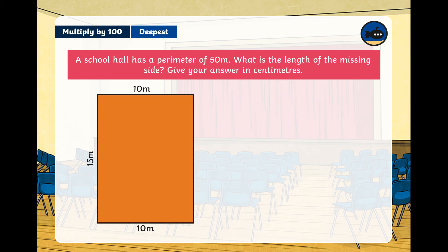A school hall has a perimeter of 50 meters. What is the length of the missing side? Give your answer in centimeters. Remember, there are 100 centimeters in one meter. Use your knowledge of perimeter — opposite sides are equal on a rectangle. Work out the missing length in meters, then multiply by 100 to convert to centimeters. Pause the video and have a go.